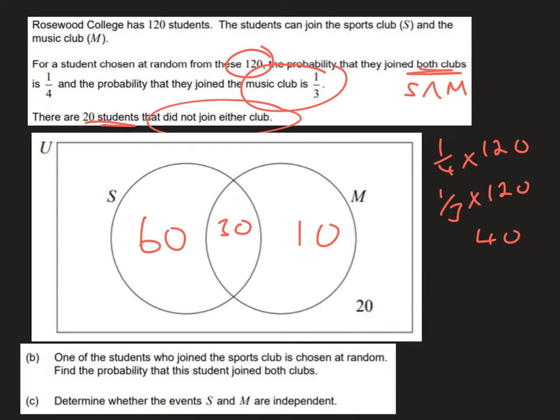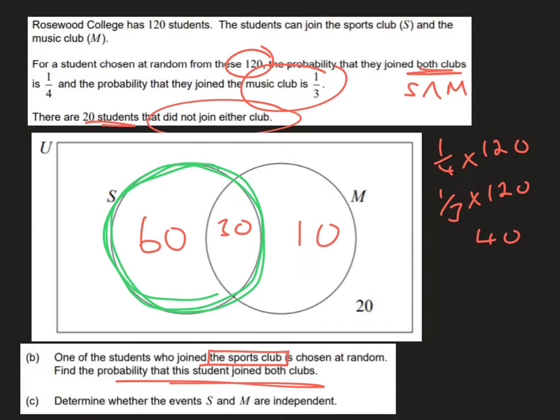In part B we're told one of the students who joined the sports club is chosen at random. Find the probability that this student joined both clubs. So in effect here what we're looking at is conditional probability because we're only interested in those pupils who are in the sports club. So we can see that there are in fact a total of 90 pupils in the sports club. Of those 90 there are these 30 here who are also in the music club. So we can take that 30 and put it as a numerator and that's going to simplify down to one third.